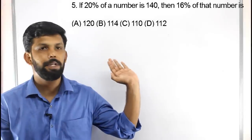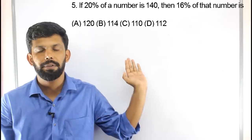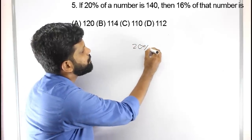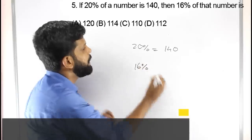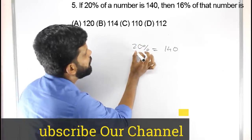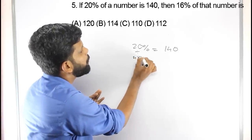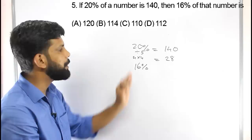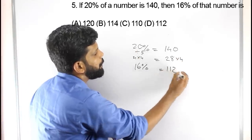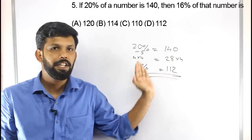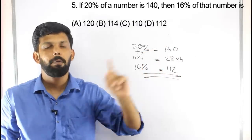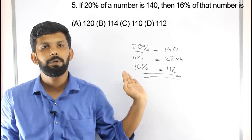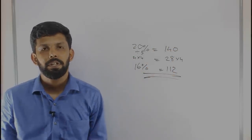The next question: if 20% of a number is 140, then what is 16% of that number? Since 20% = 140, we get 1% = 7. Therefore 16% = 7 × 16 = 112. The answer for this question will be 112. Option D is the right answer.